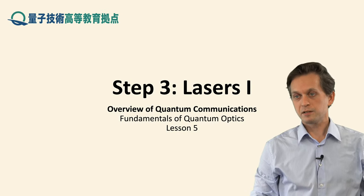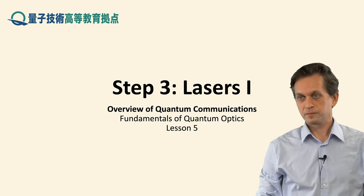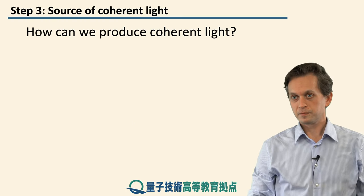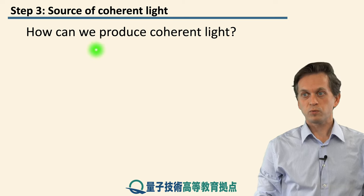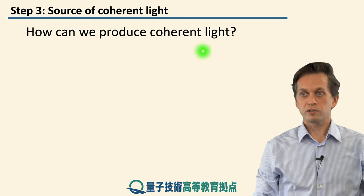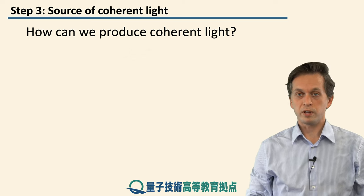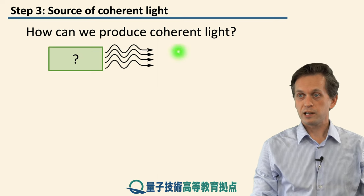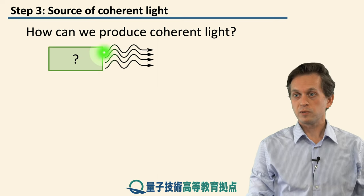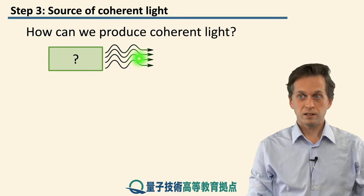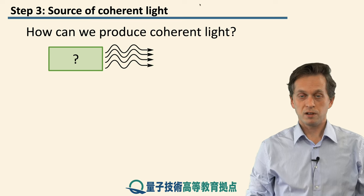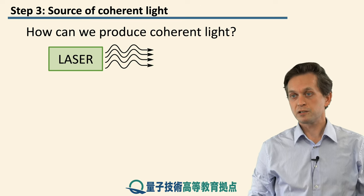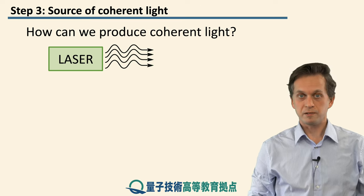Step 3, Lasers 1. In the previous step, we said that we are looking for the source of coherent light. Coherent light is in phase, it's monochromatic, and it travels in the same direction. So you may have guessed that this source is a laser.